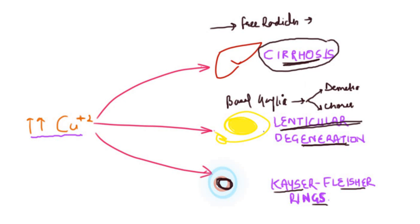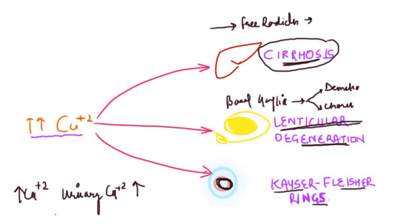Looking at the laboratory findings: first, because copper is leaking from the hepatocytes, there will be increased levels of copper within the blood, and as a result the urinary excretion of copper will also be increased — so urinary copper is increased. Next, since there is defective incorporation of copper into ceruloplasmin, the levels of ceruloplasmin will be decreased in the blood.